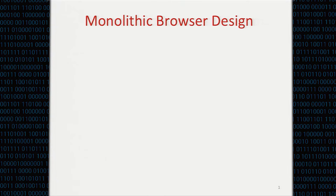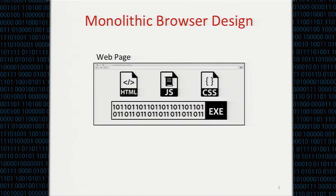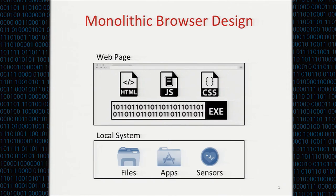Browsers used to be a monolithic piece of software. All the logic, including rendering HTML, executing JavaScript, and interacting with local systems, are in the same process. The problem with this design is that if there is a single bug in the browser, a malicious webpage can exploit the bug and take over the entire browser, and further attack the underlying operating system. For example, the attacker can download malware, install it, and steal local files or data from different applications.